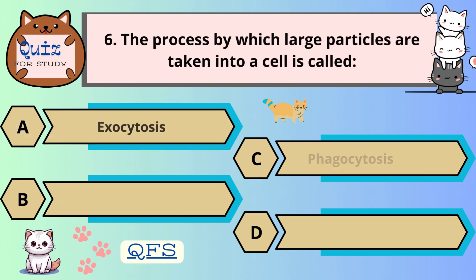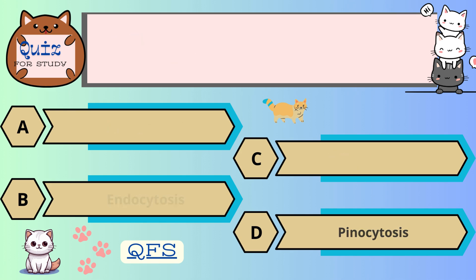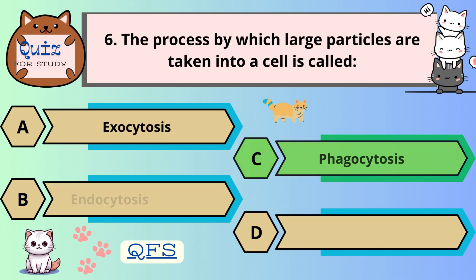Number 6. The process by which large particles are taken into a cell is called — the correct answer is C. Phagocytosis.